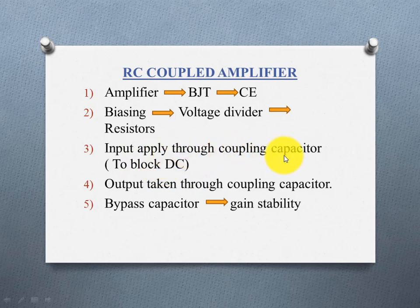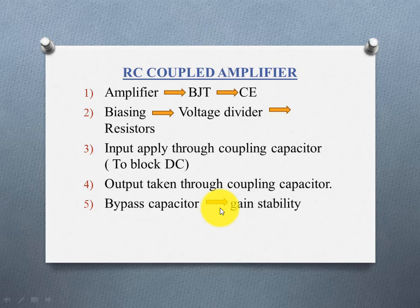Similarly, the output is connected through a coupling capacitor to the output terminal — that is the fourth point. The fifth point: we have a resistor on the emitter side, and it is parallel to a capacitor.